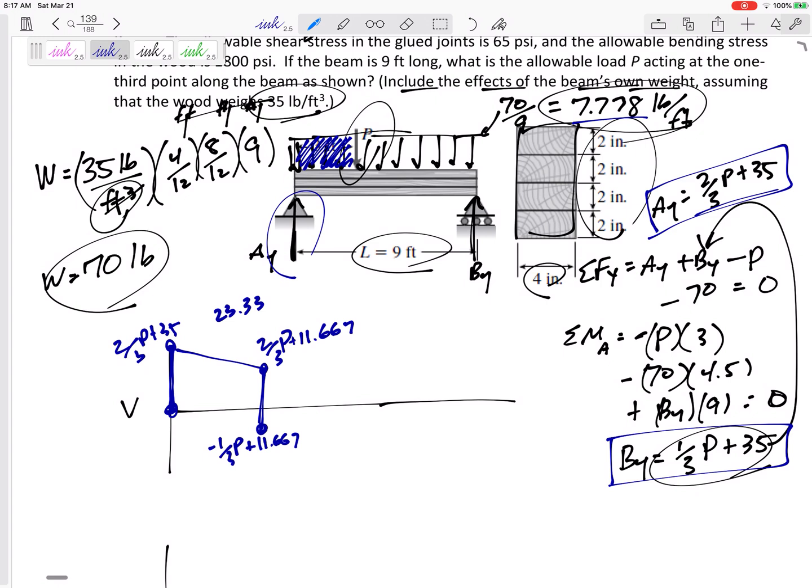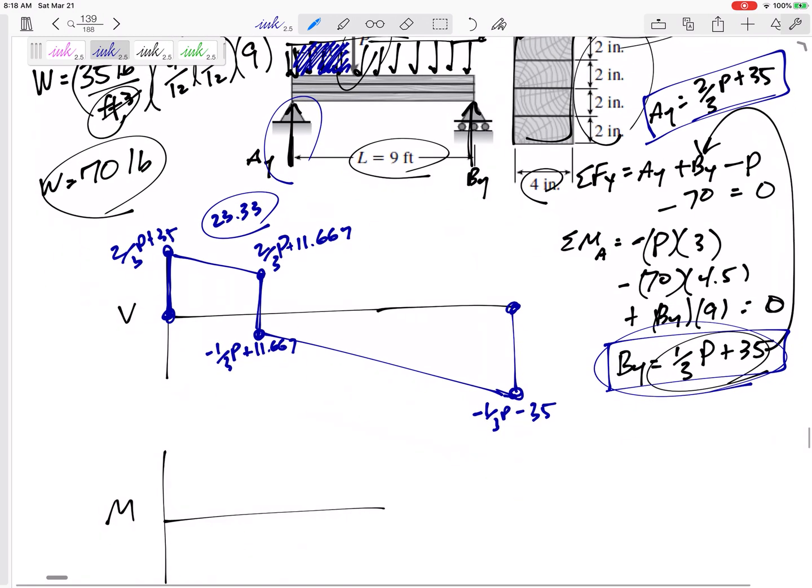And then immediately, I go down by P. It's two-thirds P minus P, so now I'm at negative one-third P plus 11.667. And then I go down even more. I go down by 46.667. So I'm down at negative one-third P minus 35. And I kind of knew that I was going to be there. Then that brings me back, the BY brings me back up to zero. So there's my shear diagram.